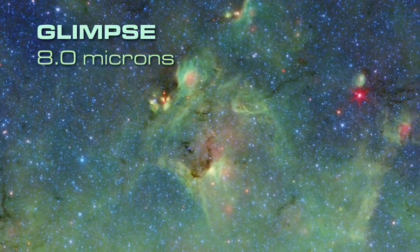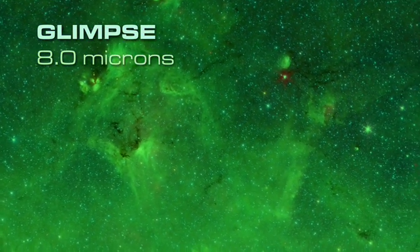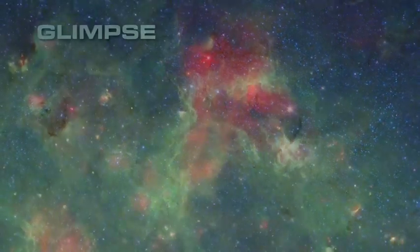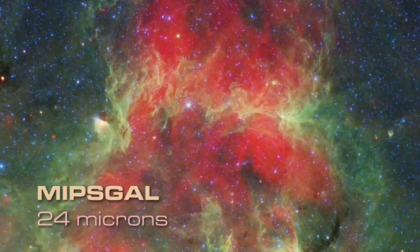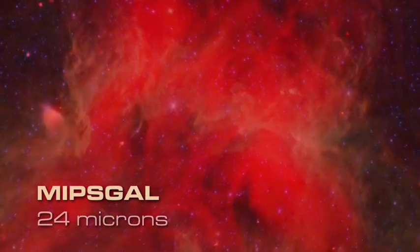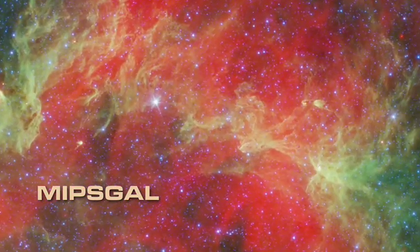Carbon-based dust molecules show up at 8 microns, represented as green. MIPS-GAL contributes the 24 micron component, rendered as red. This is the warm thermal glow from dust clouds heated by nearby stars.